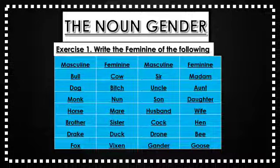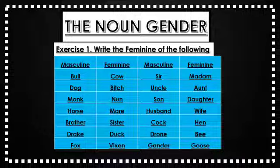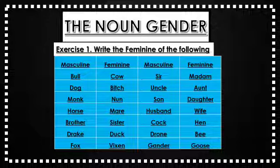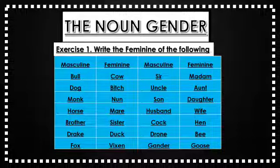Exercise number one: the question is write the feminine of the following. Bull — cow, dog — bitch, monk — nun, horse — mare, brother — sister, drake — duck, fox — vixen, sir — madam, uncle — aunt, son — daughter, husband — wife, cock — hen, drone — bee, gander — goose.